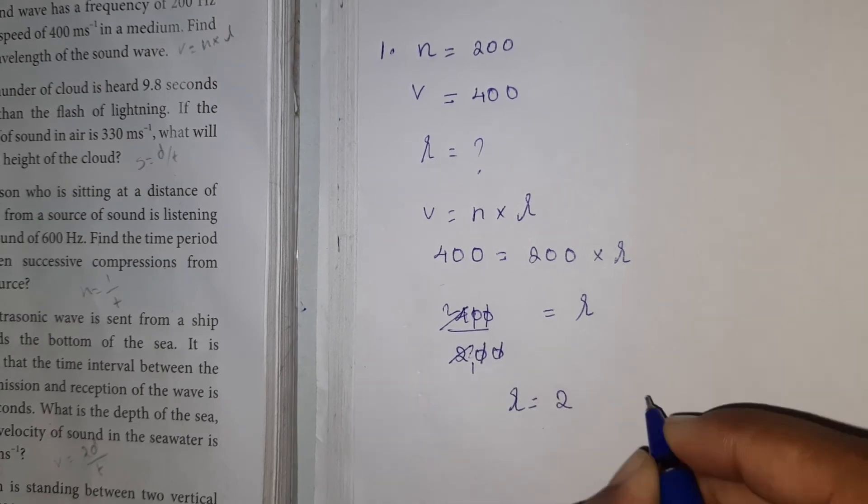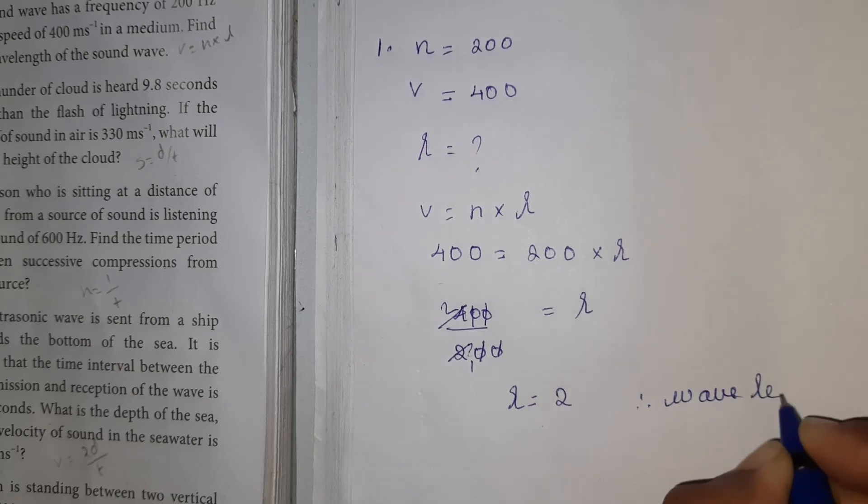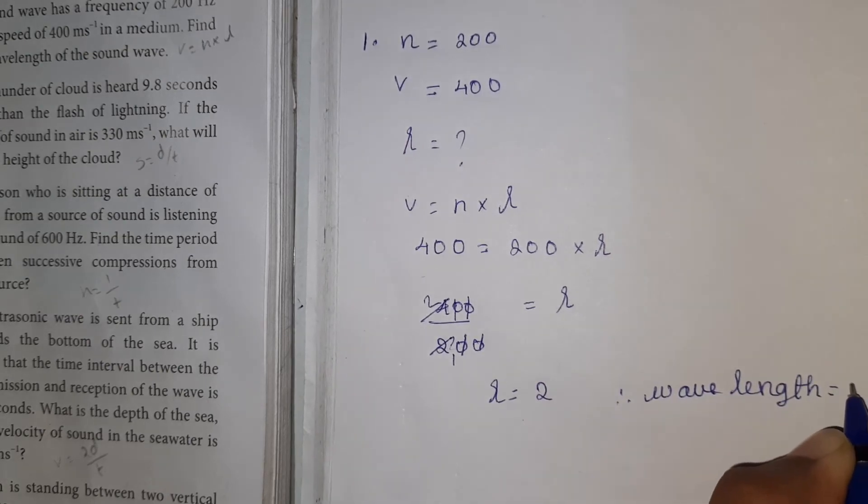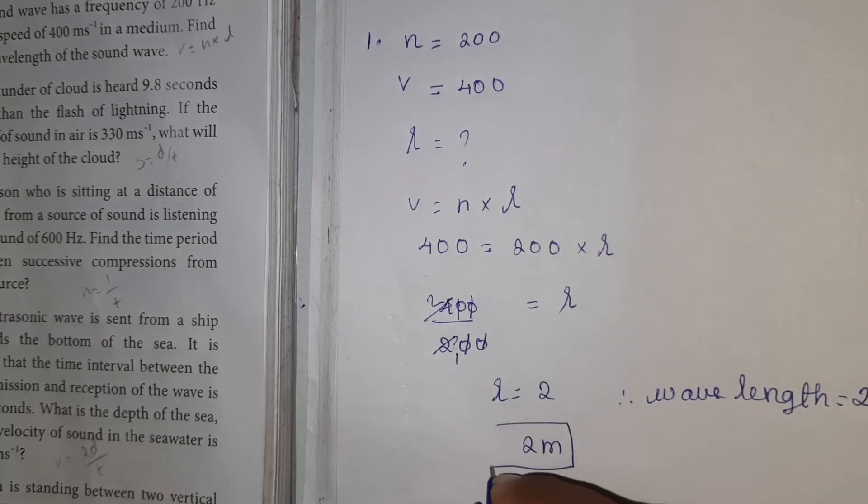So the wavelength lambda has a value of 2. The wavelength is 2 meters, and you can see the answer is 2m.